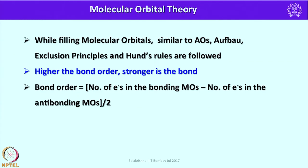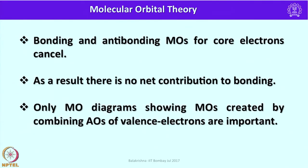Higher bond order means a stronger bond. Bond order equals the number of electrons in bonding molecular orbitals minus the number of electrons in antibonding molecular orbitals, divided by 2. Bonding and antibonding molecular orbitals for core electrons cancel each other — for example, if two electrons come from one atomic orbital and two from another, the net bond order is zero, meaning no bond exists. As a result, core electrons make no net contribution to bonding. Only the MO diagrams showing molecular orbitals created from valence electrons are important for reactivity and bond strength.